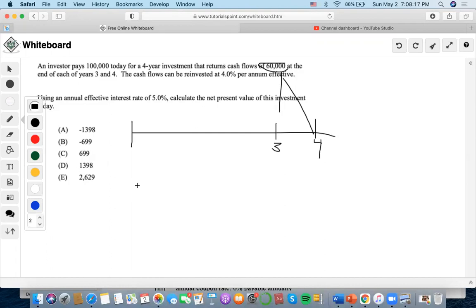So we know that the equation to solve the net present value is always the initial outlay, aka investment, the money spent, plus the money that you're going to get back from it.